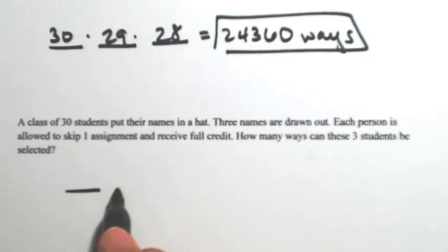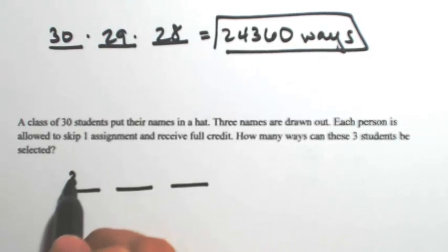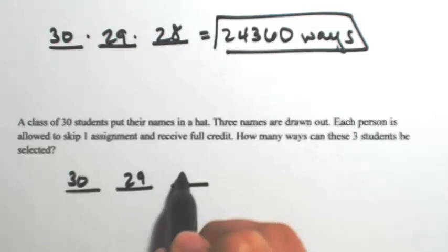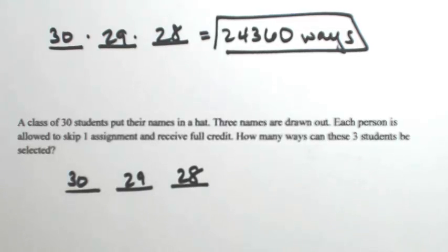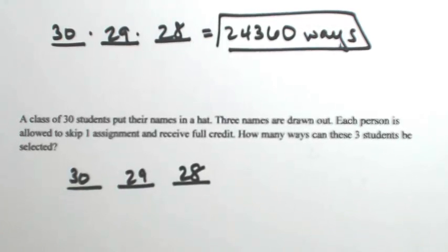We're still going to have our three winners. There's still 30 ways to pick the first one, still 29 for the second one, still 28 for the third one. That doesn't change and we would still multiply these.